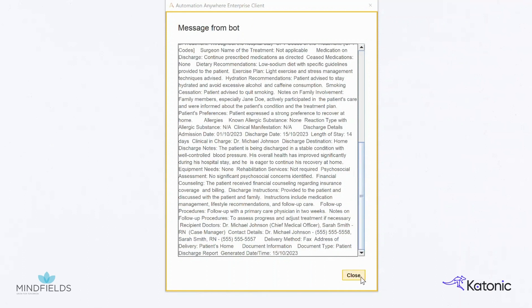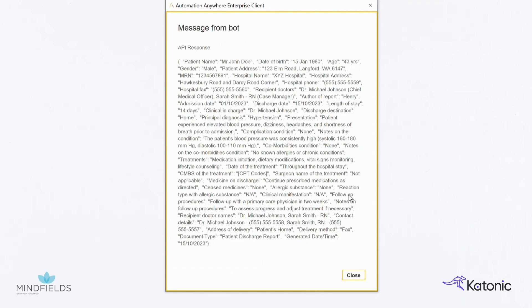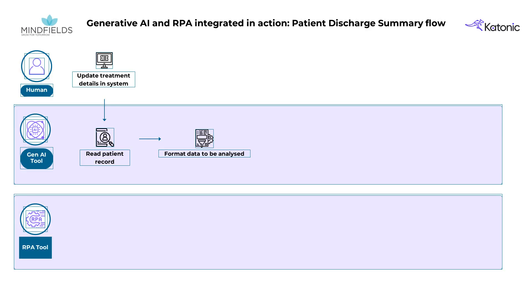Gen.AI analyzes the entire report and summarizes the key information required for the discharge report. We can see here that the patient's information has been updated and the Gen.AI tool has read the patient's record and the format has been analyzed. With that, we complete the first two steps.